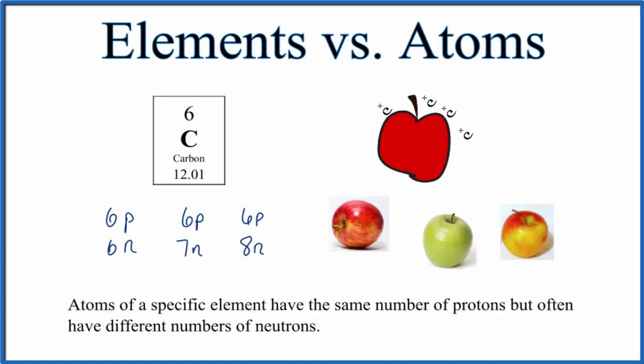So just like we have these varieties of apple here, we have different varieties with commonalities. These specific atoms here for carbon, the element carbon, they have the same number of protons, but they differ in their neutrons. So since they have different numbers of neutrons, we call them isotopes. They're different atoms of carbon.